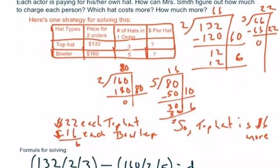So, 16 is the amount that it's going to cost me per hat. So, I wrote that down for you over here. 22 for the top hat, 16 for the bowler.